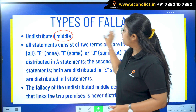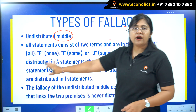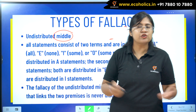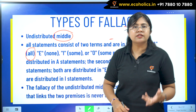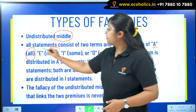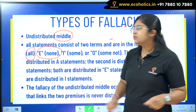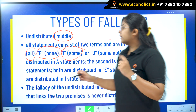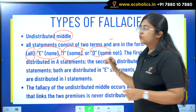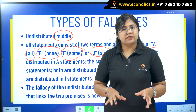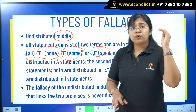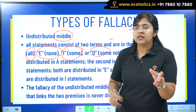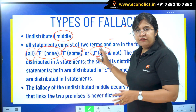Here we have the undistributed middle. Now there are four types of sentences as we all know. The A type of sentence, which is the universal positive sentence. Then we have E type, which is the universal negative sentence. Then we have I type, which is particular or partially inclusive sentences. And finally we have O type, which is partially exclusive or partially negative sentences. There is a specific rule regarding distribution and non-distribution of terms in all four statements.